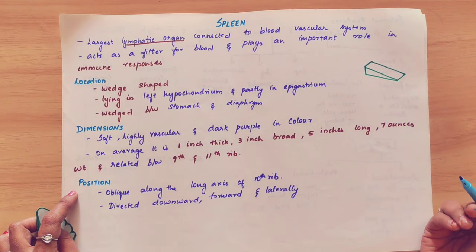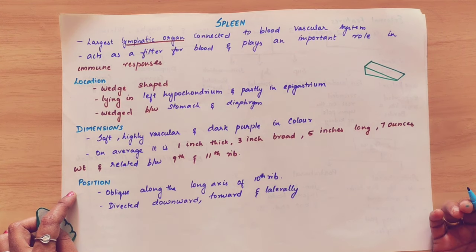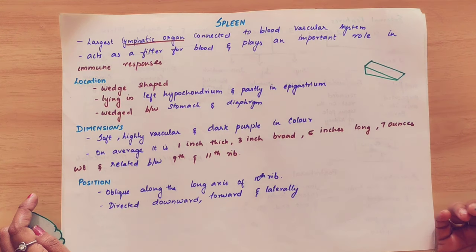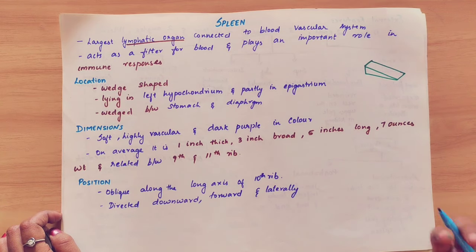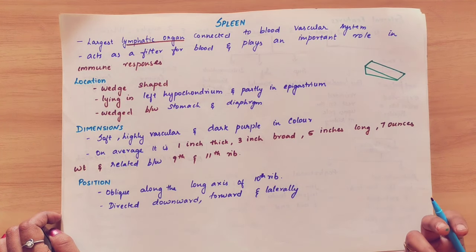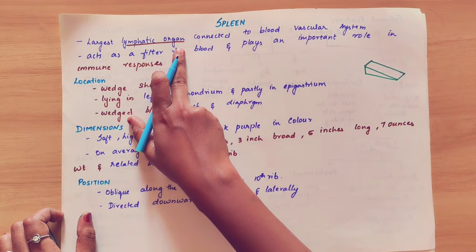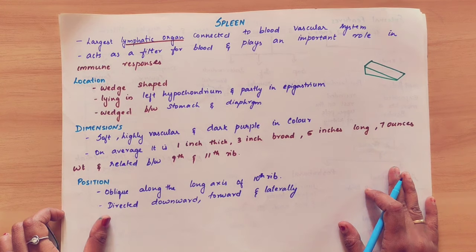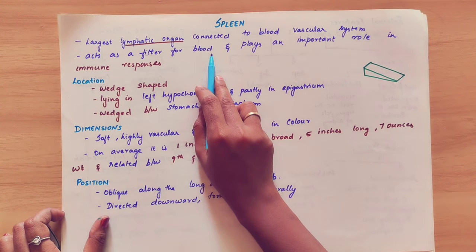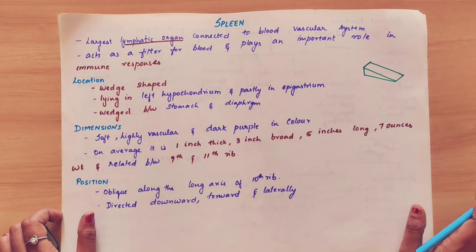The lymphatic organ filters out any foreign bodies and pathogens. When we fight and protect the immune system, it is a lymphatic organ. The largest lymphatic organ is the spleen. When we filter the blood, our immune response plays a major role.